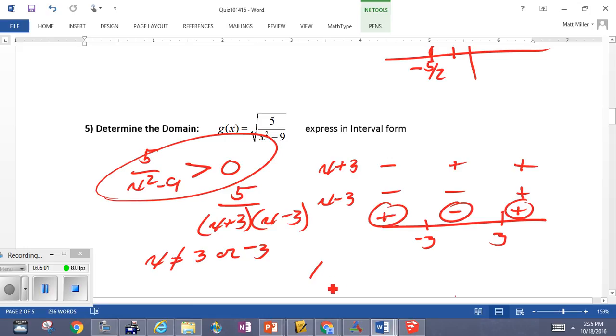Everything greater than 0, which is our plus groupings, which come in from negative infinity. Can't include negative 3. We said so here. And, then from 3, not inclusive, on out to infinity.